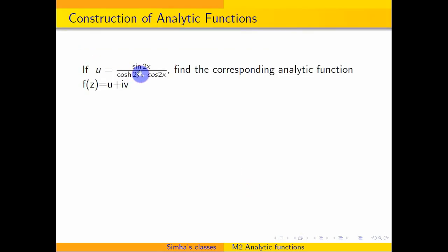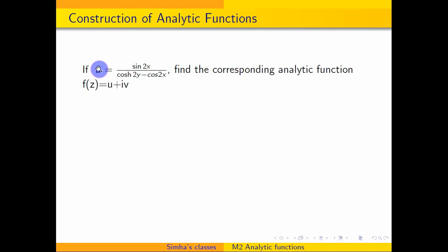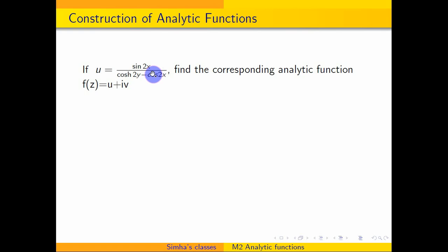This is the problem. If u is equal to sin x divided by cos 2y minus cos 2x, find the corresponding analytic function f of z equal to u plus iv. The construction of analytic functions has two methods: one is when they are given a real part, how to construct the analytic function; otherwise, when they are given the imaginary part, how to construct the analytic function. In this example, we are given the real part.